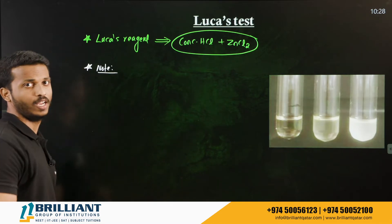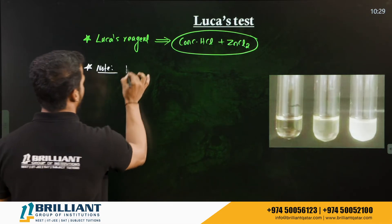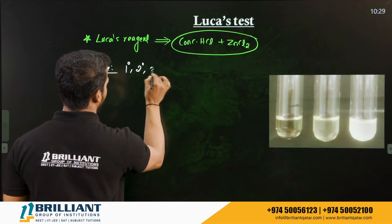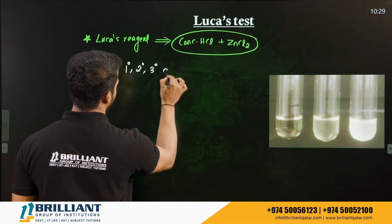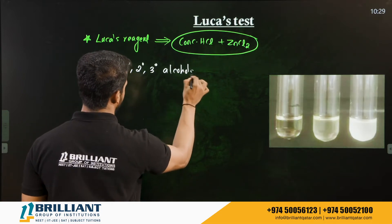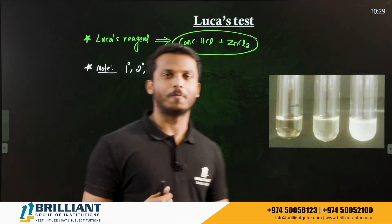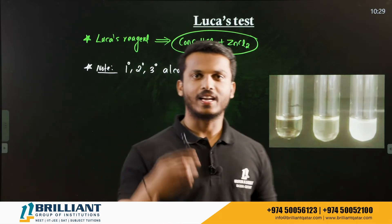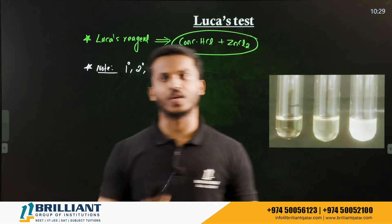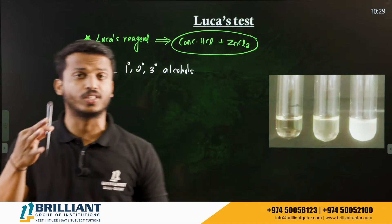The purpose of the Lucas test is to distinguish between primary, secondary, and tertiary alcohols. If you are given three test tubes containing primary, secondary, and tertiary alcohol and want to distinguish them through a chemical test, you use the Lucas test.